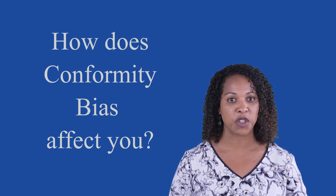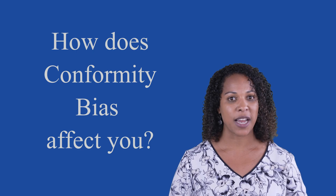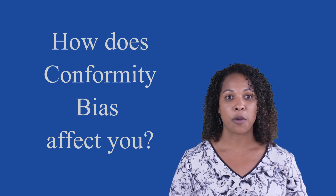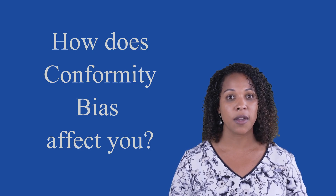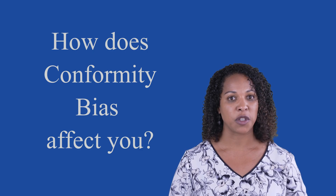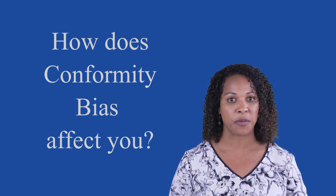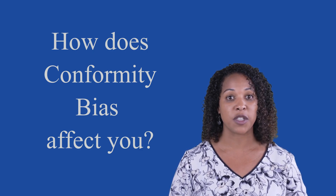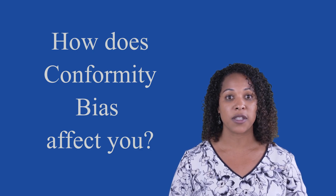Remember the Asch experiment? Participants had to match the length of a line with one of three comparison lines. When actors in the room purposely chose the wrong answer, about 75% of the participants conformed to the majority's incorrect choice at least once.